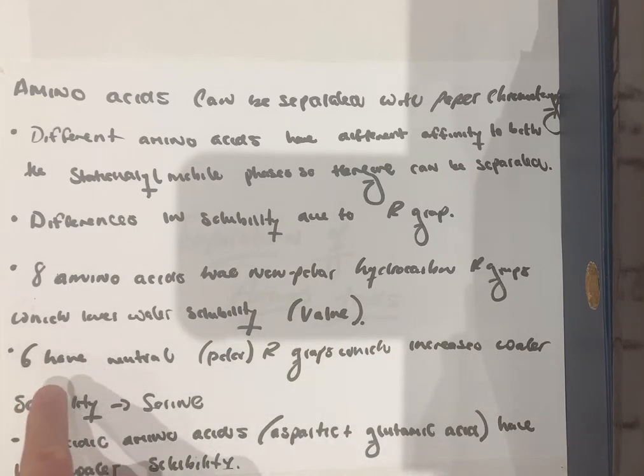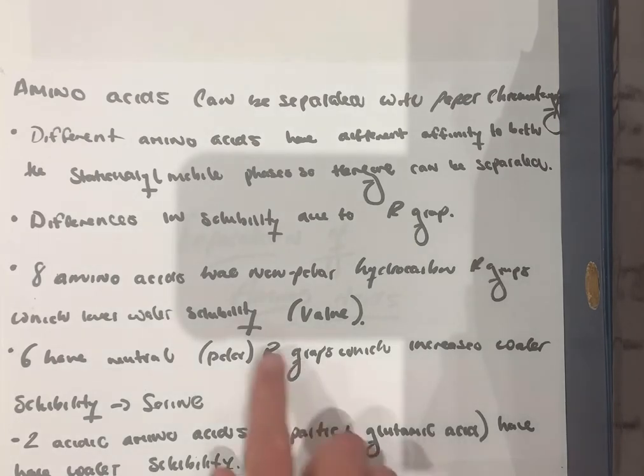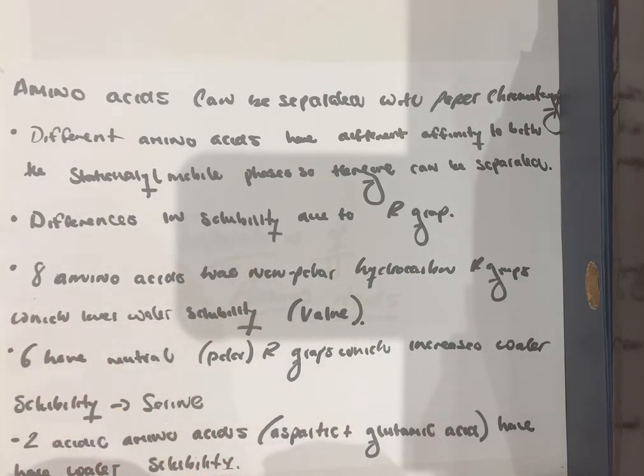You then have six neutral polar R groups, for example, serine, which increases the water solubility. The polar R group is able to form hydrogen bonds due to the differences in electronegativity of the polar bond, able to form bonds with the water and therefore has a great affinity for the mobile phase and will travel further up the chromatography paper and can be separated.